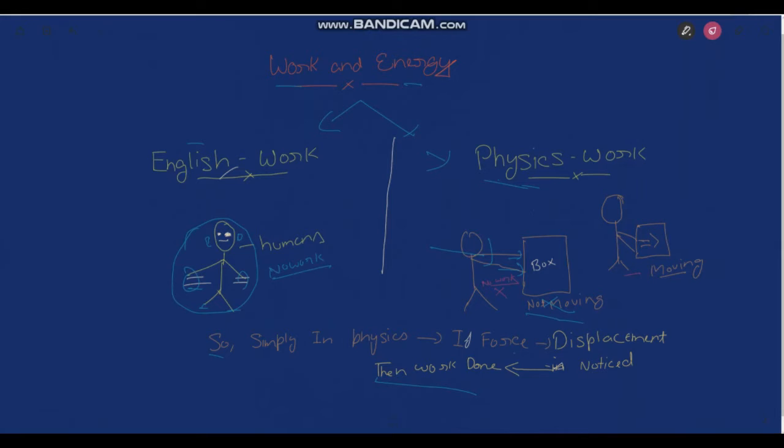So this is the reason why this person is not doing any work. And in the second figure, you can see this person is applying force and the box is moving. In this case, the force is also being applied and the box is also showing some displacement. So that's why there is work being done.